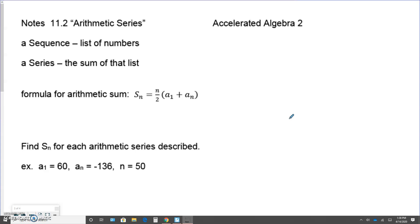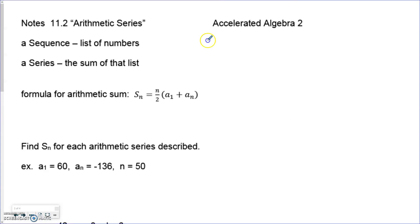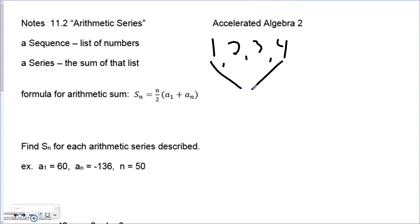Where this formula comes from: let's start with a basic sequence — 1, 2, 3, 4. This is arithmetic, increasing by 1, common difference is 1. If we find the series, we add all four numbers: 1 plus 2 plus 3 plus 4, and the entire series equals 10. If you take the first term and last term together, that gives 5; and 2 and 3 give another 5 — effectively two 5s.